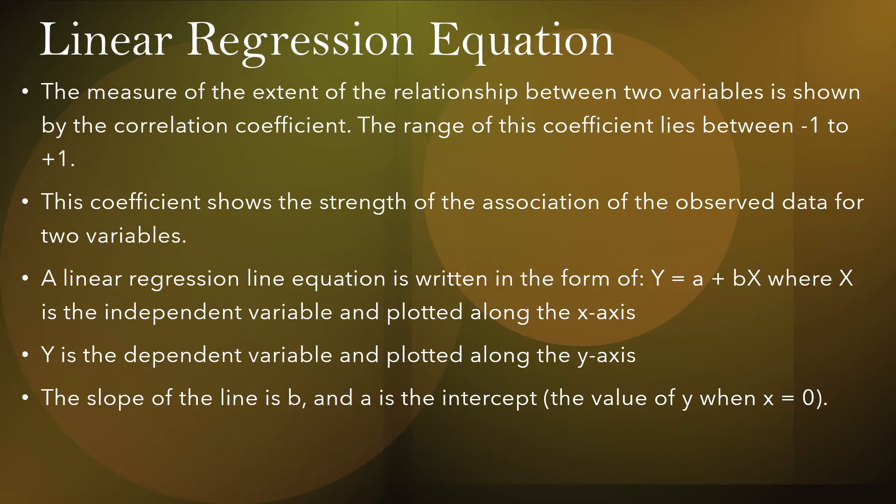A linear regression line equation is written in the form y = a + bx, where x is the independent variable plotted along the x-axis, y is the dependent variable plotted along the y-axis, b is the slope of the line, and a is the intercept — the value of y when x is equal to zero.